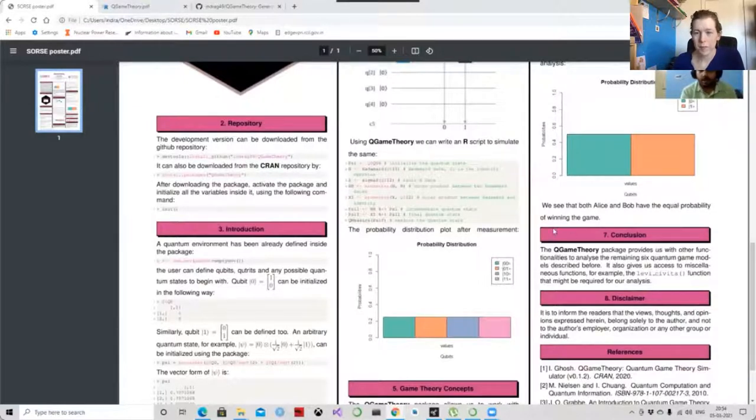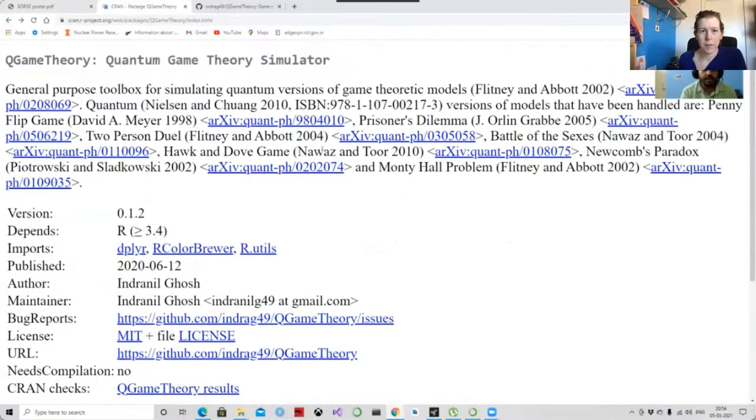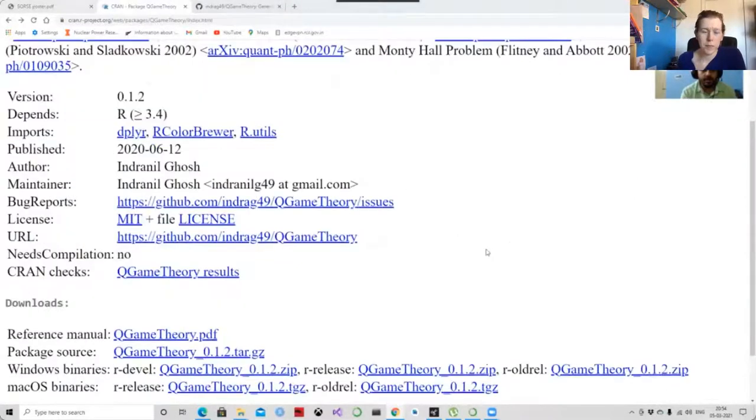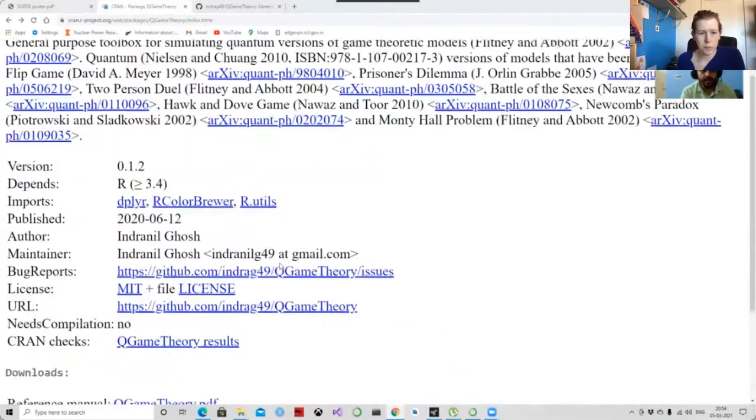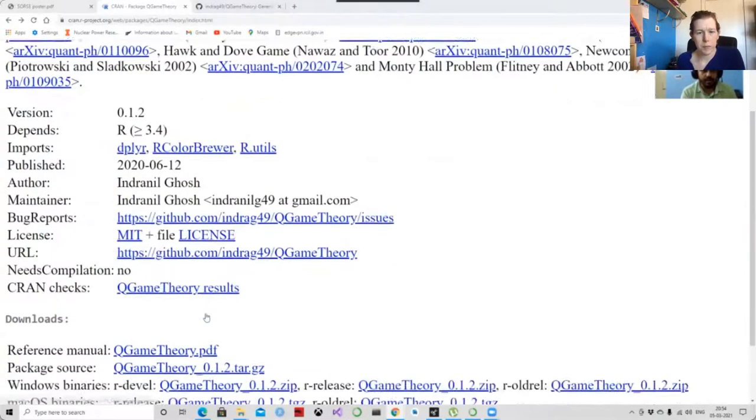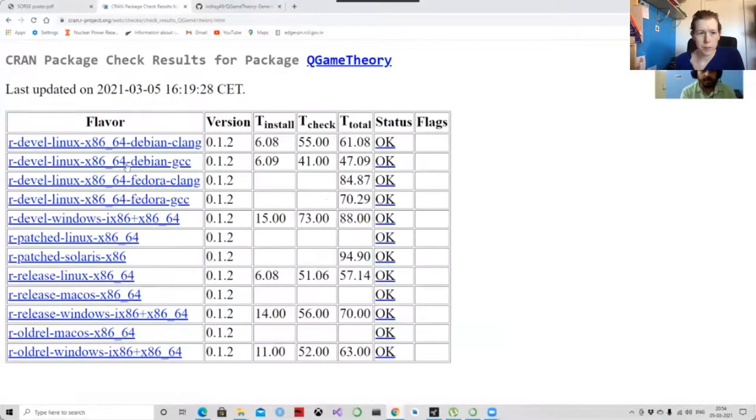So now I want to show you the q-game repository. So this is actually the q-game repository for this package, which holds all the important links and abstracts and all the informations. So you can come here and you can run the checks. You can check how the package is running on the CRAN server.